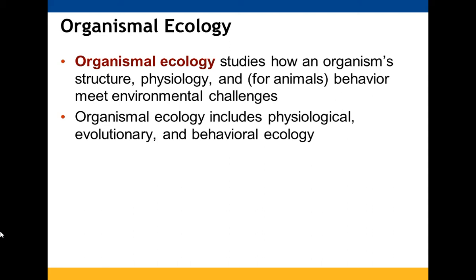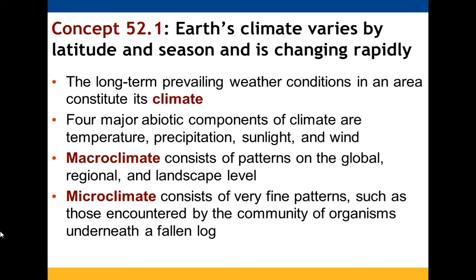Climate refers to long-term prevailing weather conditions, not day-by-day changes but how things change over an extended period of time. There are four major abiotic components: temperature, precipitation, sunlight, and wind. Macroclimate looks at patterns on a larger scale — global, regional, and landscape. Microclimate looks at very fine patterns in specific locations, such as the community of organisms underneath a log.